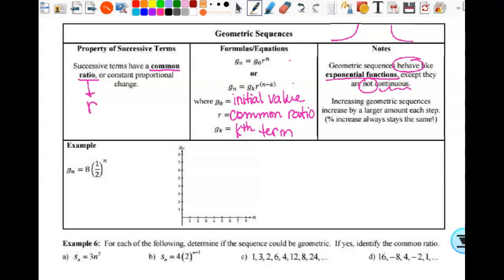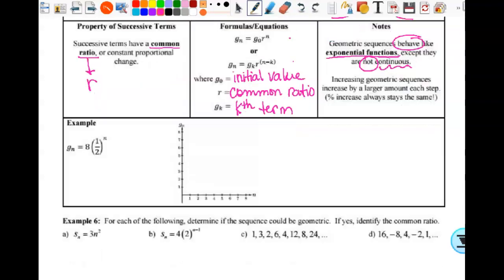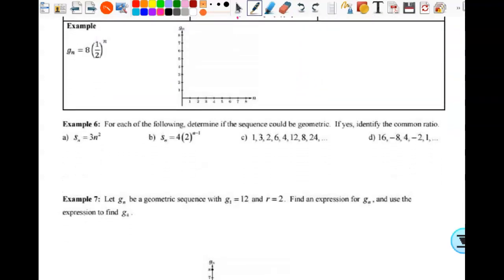Increasing geometric sequences increase by a larger amount each step, and if it's decreasing, then it'll be a smaller amount each step, but that's what makes them have that curve-like behavior. So let's look at this example, the graph here. We're gonna make a little t-chart here. We're gonna have n and g sub n. We're gonna do zero, one, two, three, and four.